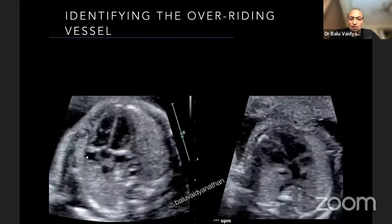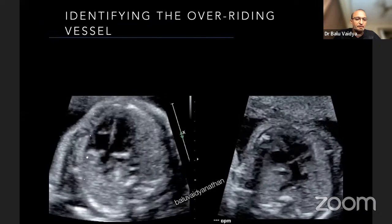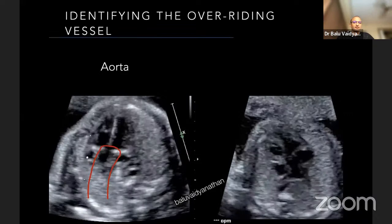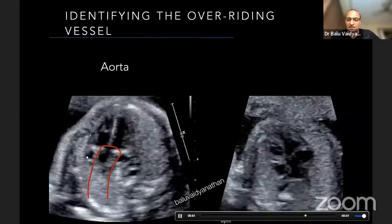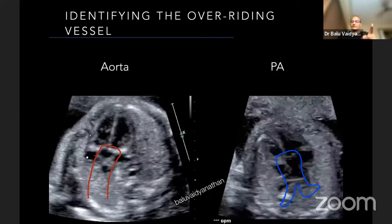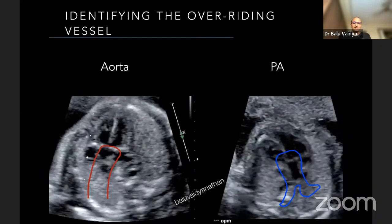The overriding vessel could be either the aorta or the pulmonary artery. In the first picture, the overriding vessel is not branching — it is a single vessel going straight, and that is an overriding aorta. In the second, the overriding vessel, if you look carefully, comes and you see a division — it's a bifurcating vessel, so that is an overriding PA. Something new today: not all that overrides is the aorta; the PA can also be overriding.